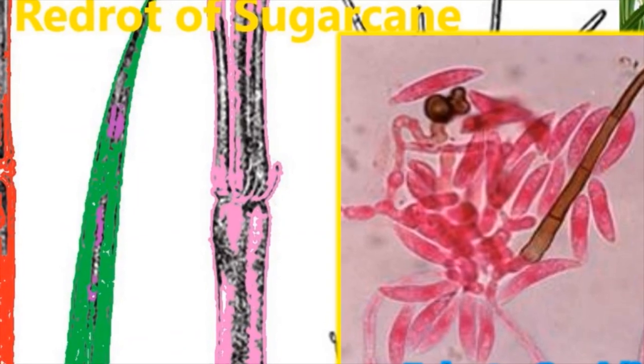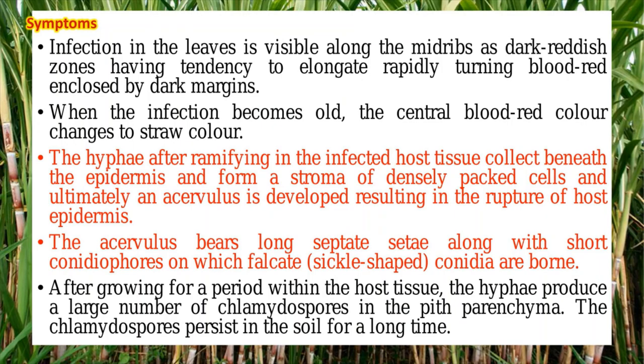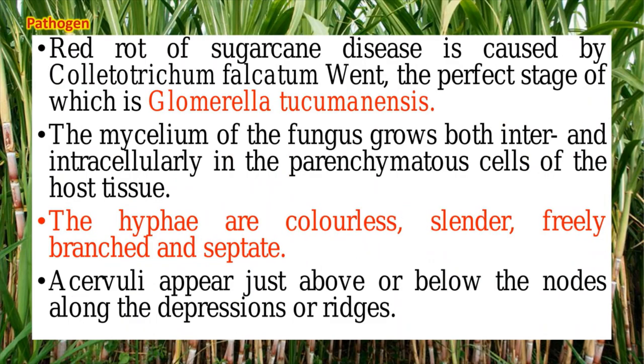In addition to conidia, the pathogen also produces another type of asexual spore called chlamydospores. Chlamydospores can also spread the disease. They can survive in the soil even after harvesting the sugarcane crop and cause reinfection when sugarcane is again planted in the same cropland — which is why we go for crop rotation. The perfect stage of this pathogen is also known; it is called Glomerella tucumanensis.